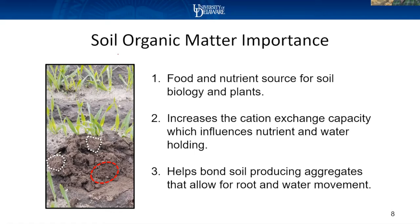Organic matter is very important as a food source and nutrient source for the biology in your soil and for your plants — it can feed your crop and feeds the soil biology. It can increase cation exchange capacity. Organic matter has the highest CEC per weight of anything in the soil, though it doesn't happen to make up a lot of the soil itself. It also helps bond and produce aggregates — having aggregates versus crumbled structure makes it easier for water to move down cracks in your soil and for roots to move through as well.